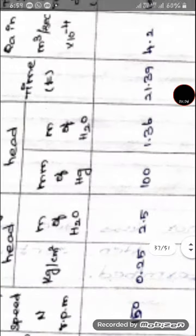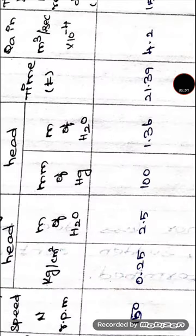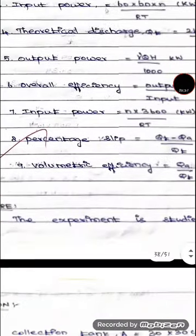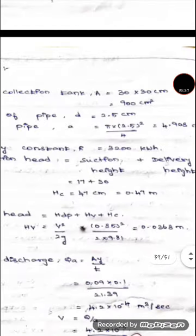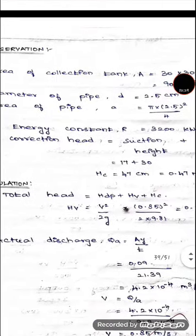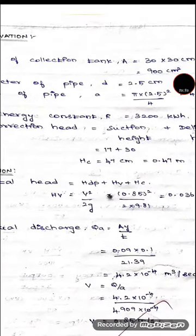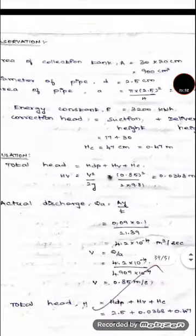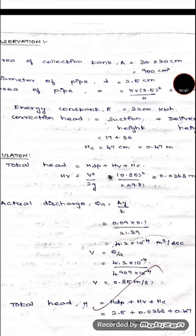The difference in specific gravities is used to convert the value from millimeter of mercury to meter of water, and then we divide by 1000 to convert from millimeters to meters. After converting both values, we add them together to calculate the correction head, which is h_x = 0.47 meter.